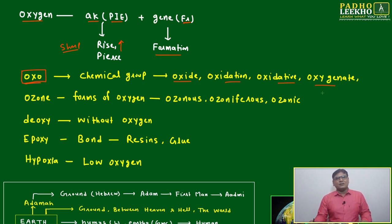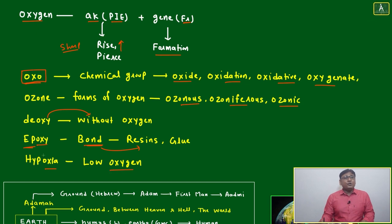Ozone - forms of oxygen: ozonous, ozoniferous, ozonic. Deoxy - just opposite, without oxygen. Epoxy - epoxy means a strong bond. All resins or all adhesives, glue, all will be in the category of epoxy.